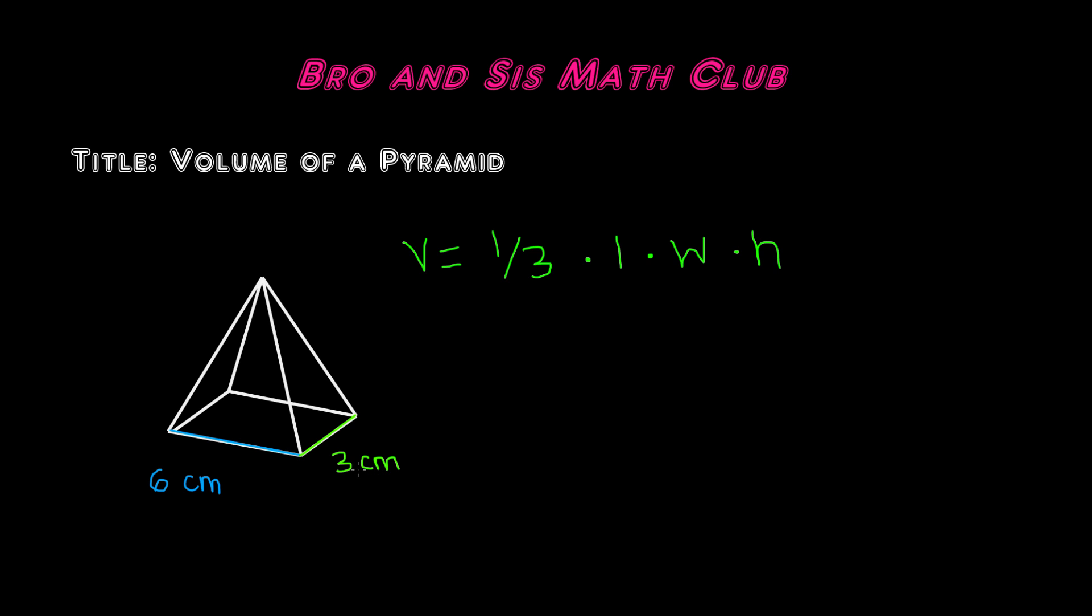Next we have to find the height. The height goes from the apex of the pyramid, which is over here, down to the base. So let's draw a line to show the height. This is the height of the pyramid, and let's say that the height of the pyramid is 7 centimeters.